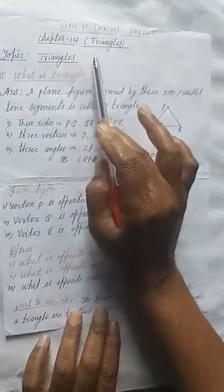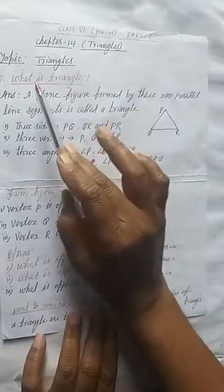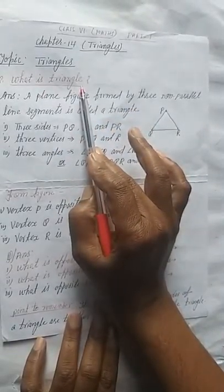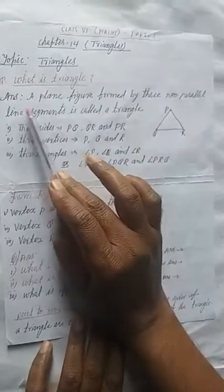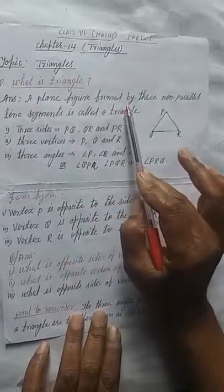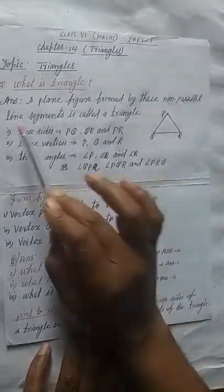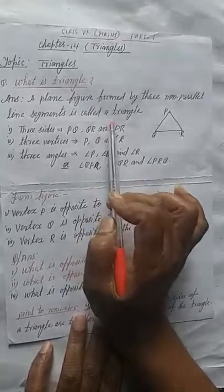You already know regarding the triangle. What is a triangle, children? Now let us see. Here, a plane figure formed by three non-parallel line segments is called a triangle.